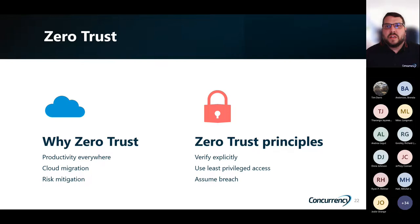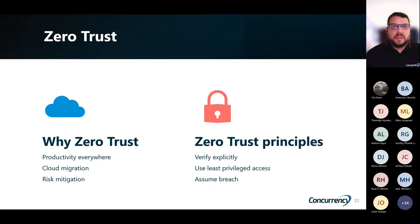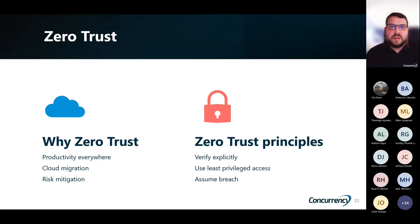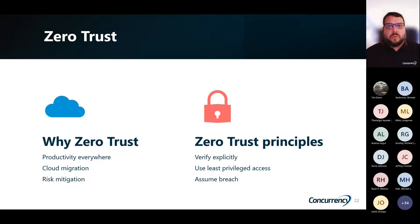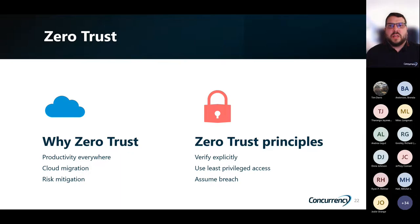Zero trust: never trust, always verify. Why would we use zero trust? It really makes us productive from anywhere and everywhere. We can use any device at any time. With cloud migration, we're making intelligent security for today's complex environments. And risk mitigation — we can close those security gaps quickly and minimize the risk of lateral movement. The zero trust principles: always verify — check where you're connecting from, no matter what device or location, before granting access to resources. With least privileged access, we always use just-in-time and just-enough privileges. And we should always assume breach. Every access request is fully authenticated, authorized, and encrypted before we grant access.